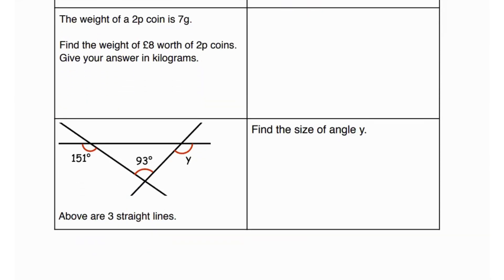Next it says the weight of a 2p coin is 7 grams. Find the weight of 8 pounds worth of 2p coins, giving your answer in kilograms. If one 2p coin equals 7 grams, 8 pounds is basically 800 pence. So for one pence the weight is 7 divided by 2. For 800 pence it's 7 divided by 2 times 800.